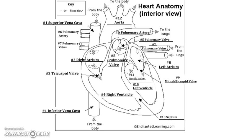Here is the heart anatomy picture from class, numbered to show the path of blood. Starting with the vena cavas — superior and inferior — at the top and bottom: they bring deoxygenated blood from the body to the right atrium, number two. The right atrium uses the tricuspid valve, number three, to allow blood to enter the right ventricle, number four. Blood in the right ventricle is squeezed through the pulmonary valve, number five, to reach the pulmonary arteries, traveling away from the heart to the lungs, where it becomes oxygenated.